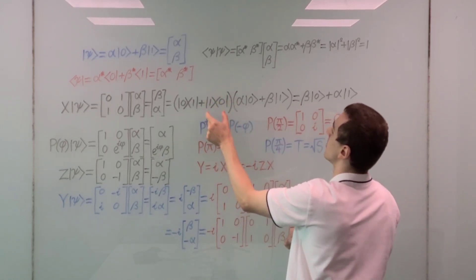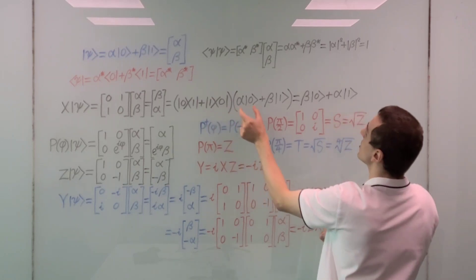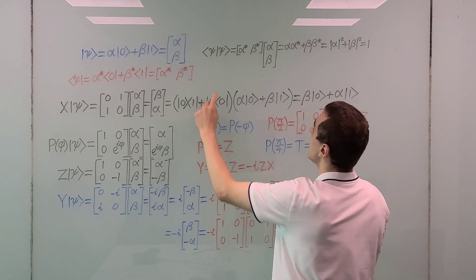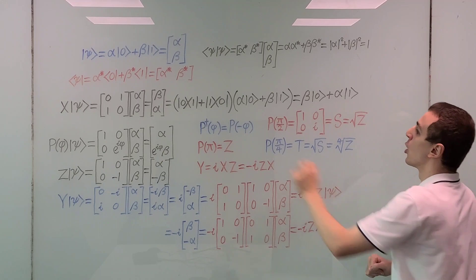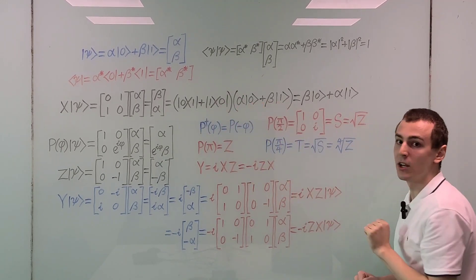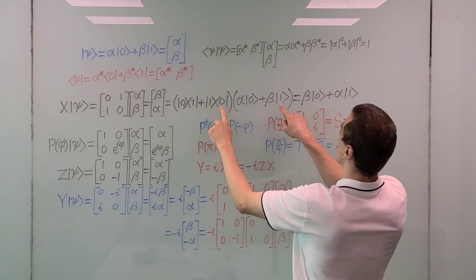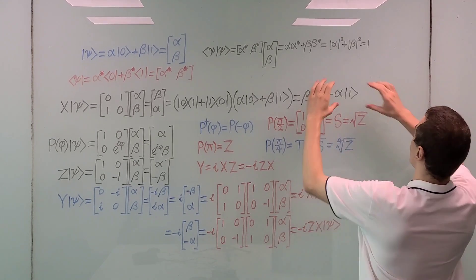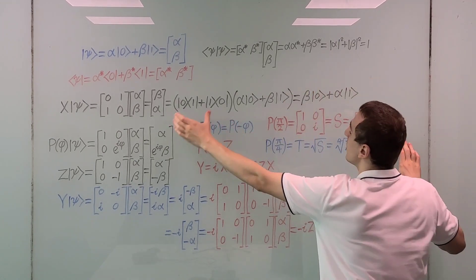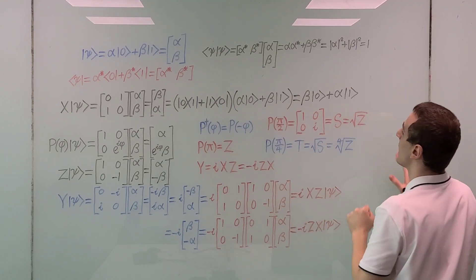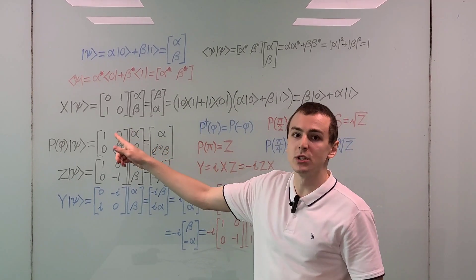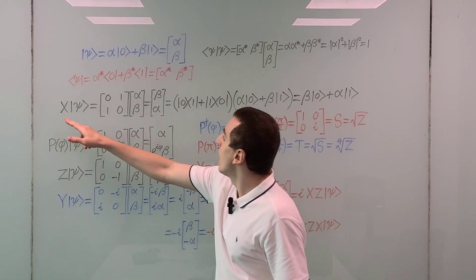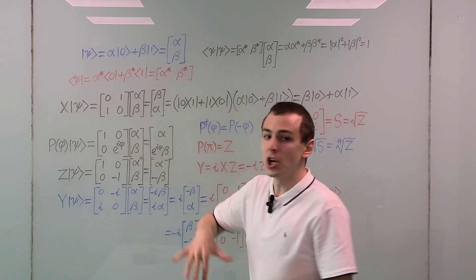When you act with |1⟩⟨0| on the state, the zero and one inner product gives zero, so there's no contribution from that term. These are the only terms that are left when we expand all combinations out. You can see that Dirac notation and the matrix representation are equivalent — whichever one you feel more comfortable with, you can use. So that is the Pauli X operator acting on a general qubit state: it has the effect of a bit flip.